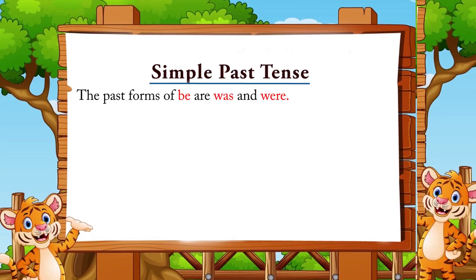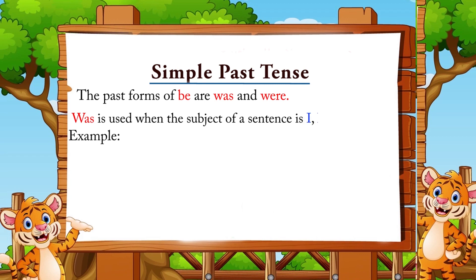The past forms of 'be' are 'was' and 'were'. In simple present tense we use am, is, are; but in past tense we use was and were. 'Was' is used when the subject of the sentence is I, he, she, or it. Example: She was in Shere last week.